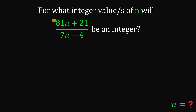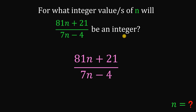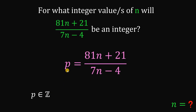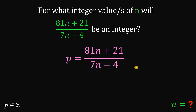The question is: for what integer value or values of n will the expression (81n + 21) / (7n - 4) also be an integer? Let's take our expression of (81n + 21) / (7n - 4) and let this equal another variable — let's call it p. Since this expression is an integer, p is also an integer. Now let's set aside this result and focus on this equation.